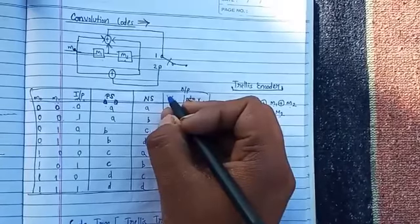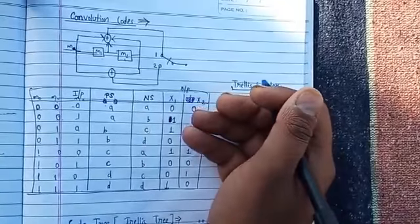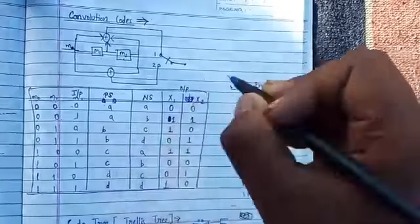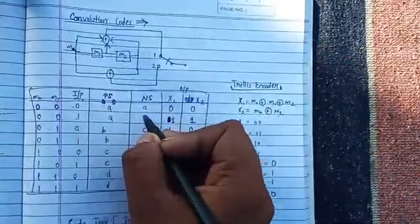Hey guys, welcome back to part 3 of the convolutional code. Today's topic is making the state diagram to the state table. Let's see how we can make it. It's simple, you just have to focus on two things: your previous state and your next state.